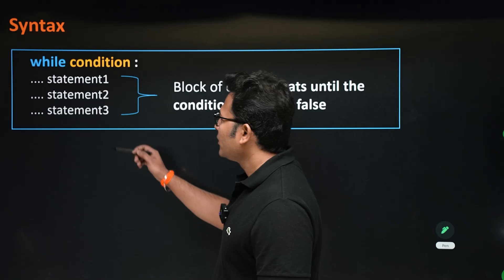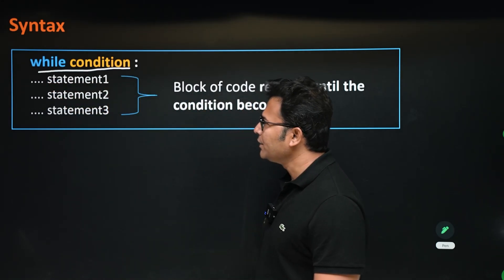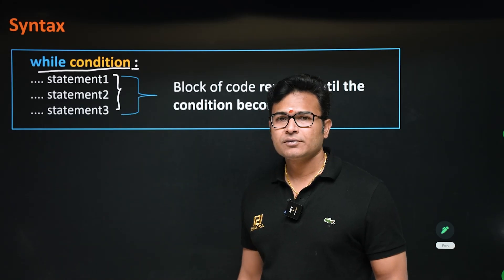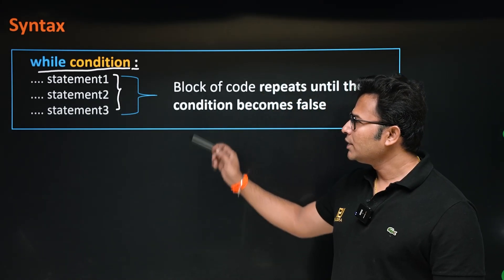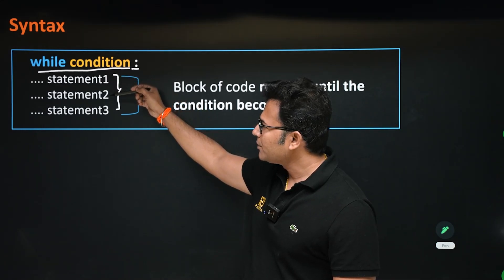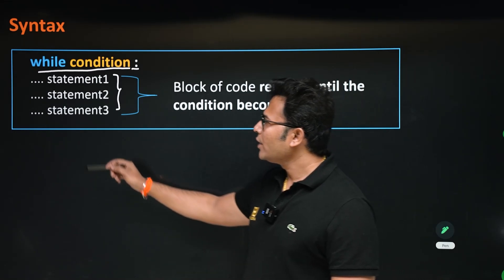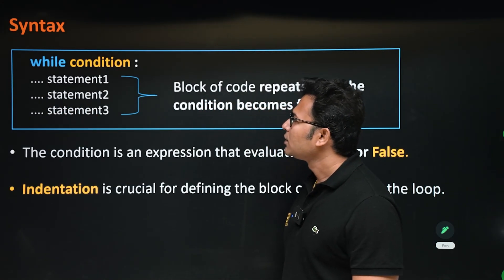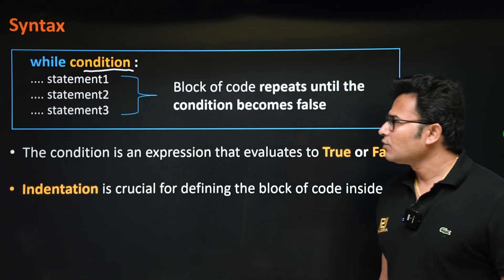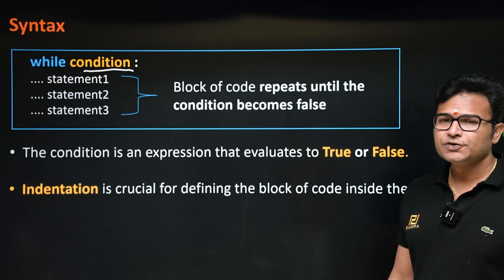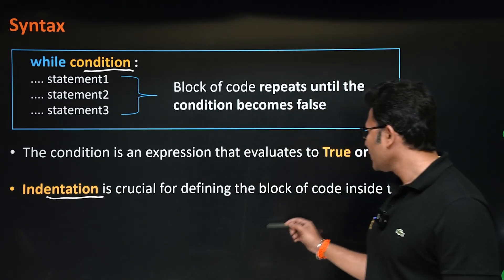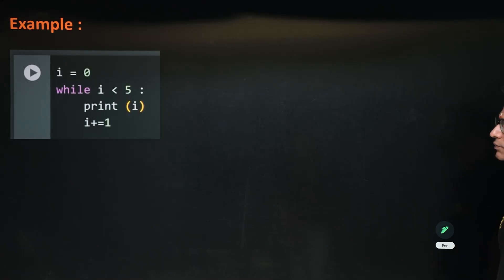The syntax of a while loop: you write 'while' followed by a condition followed by a colon — 'while condition:' — then you put statements with indentation. There should be four spaces of indentation. That block of statements — statement one, statement two, statement three — gets executed. The condition will either be true or false: if it is false the while loop ends, if it is true the loop continues. Indentation is very important for defining the block of code inside the loop.